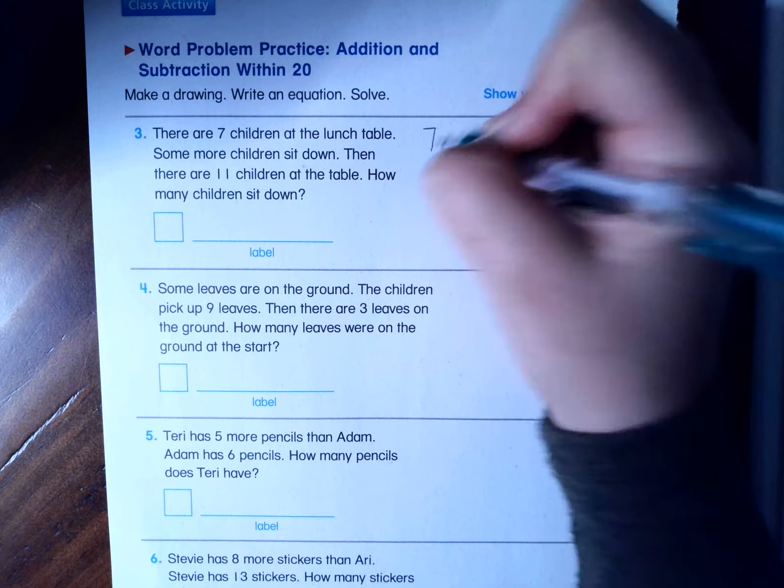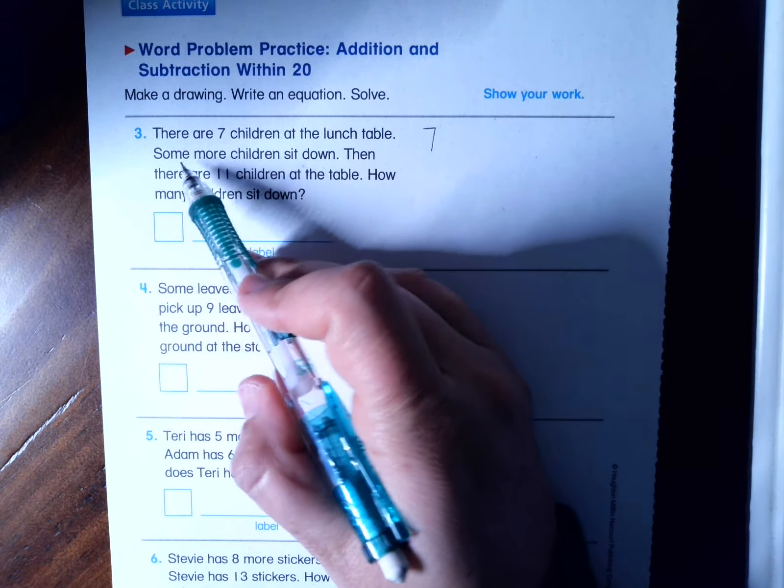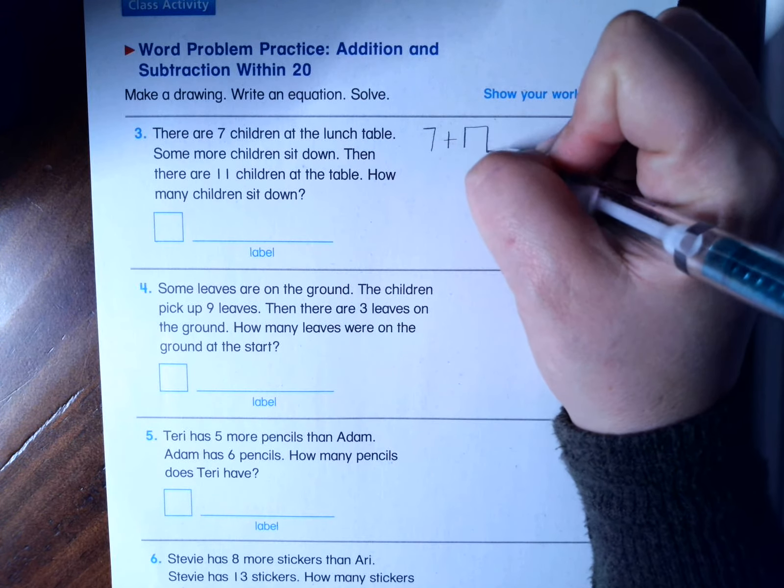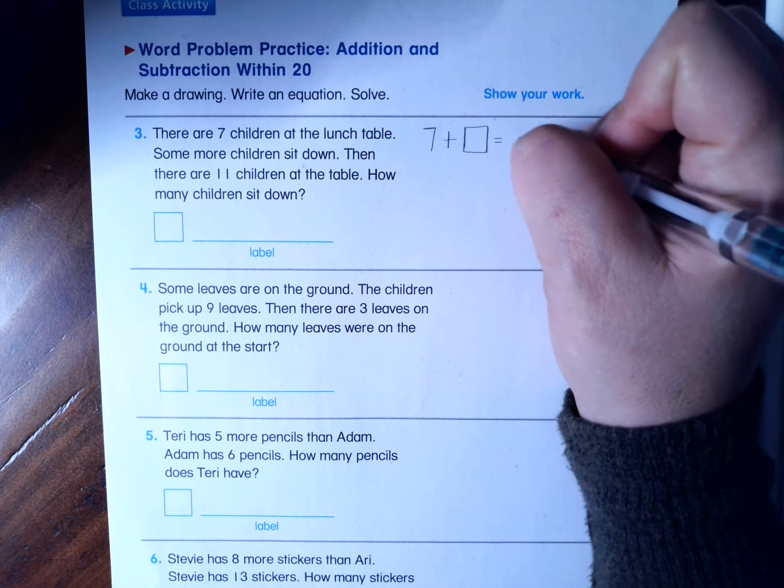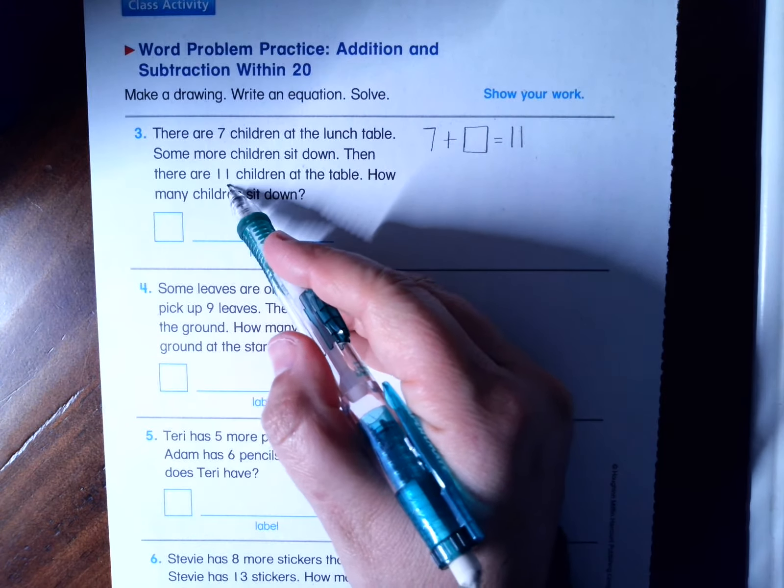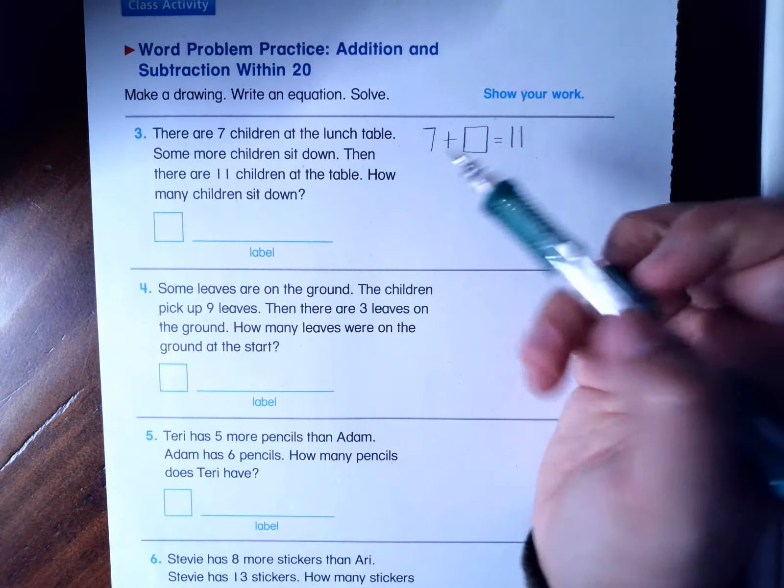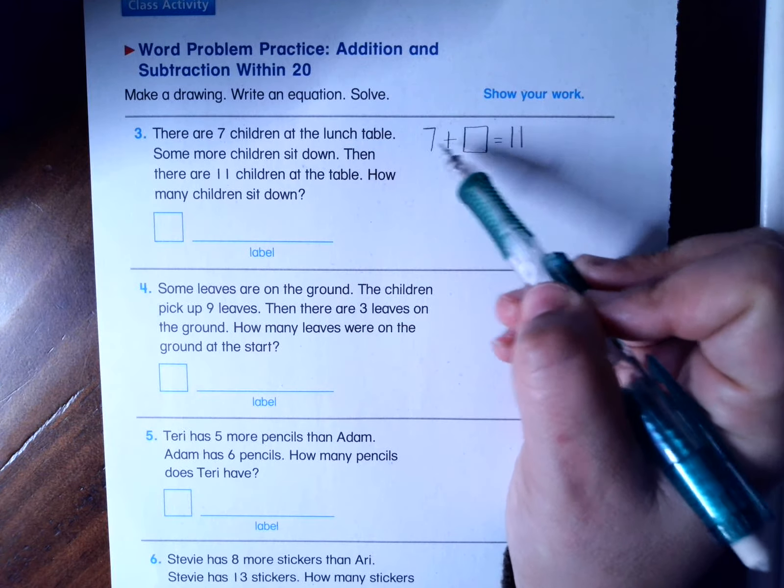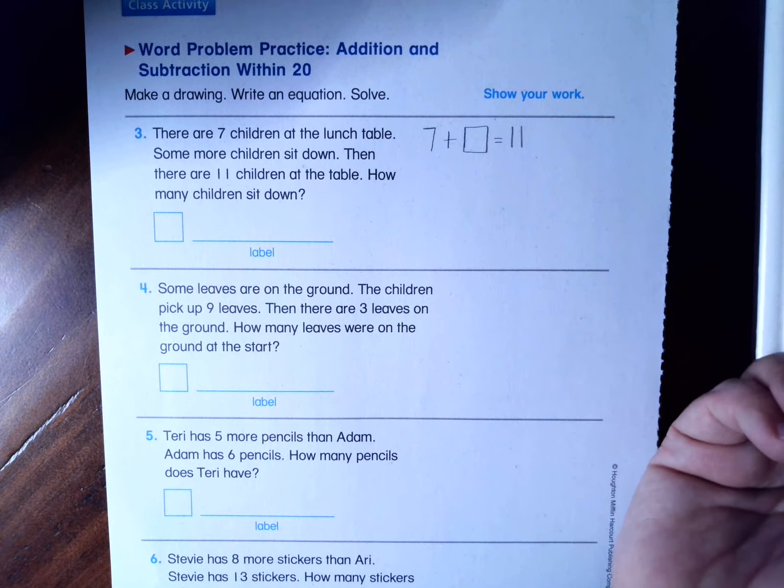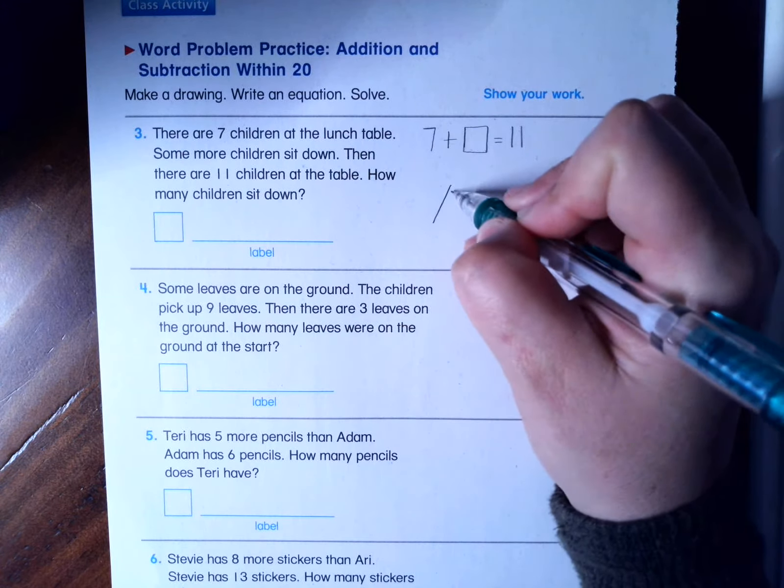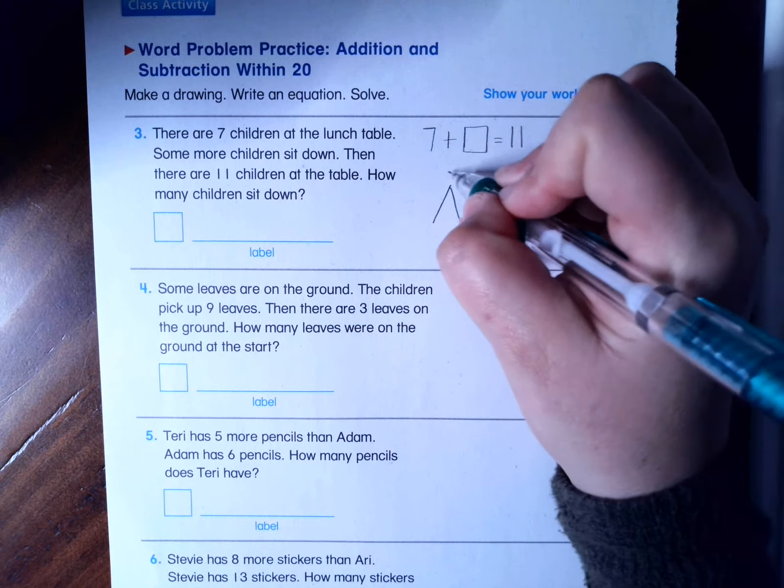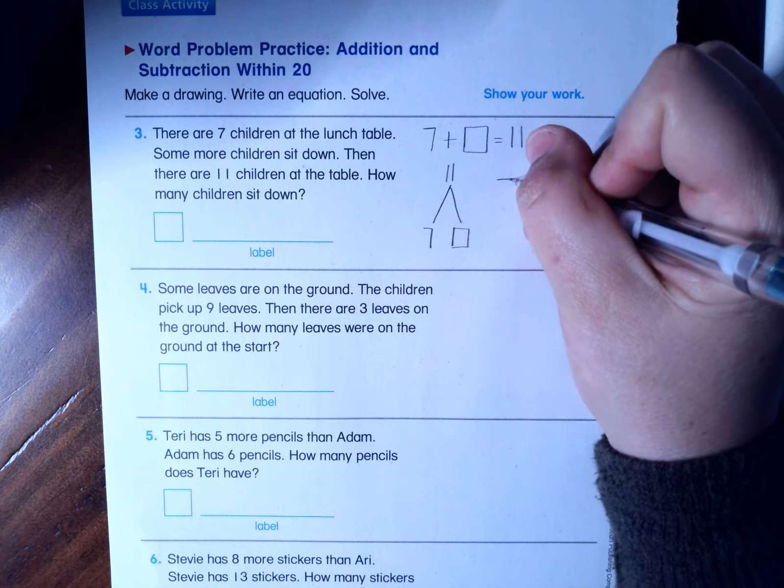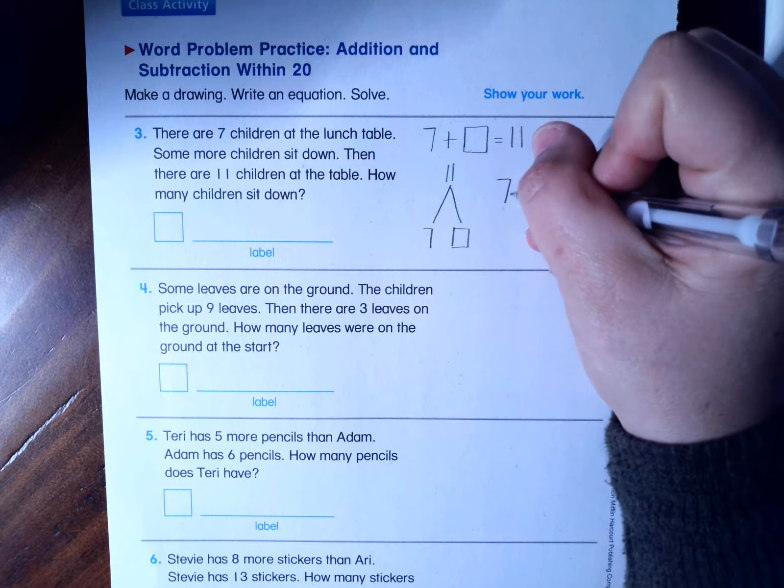This is one of the word problems that I like to write as I read. So I have seven children at the table. Some more sit down. So plus box equals 11 are there now. So I know that I can add something to seven to get 11. I do have to draw some sort of picture. You can draw a math mountain, or you can just use a picture to help you figure out the answer.